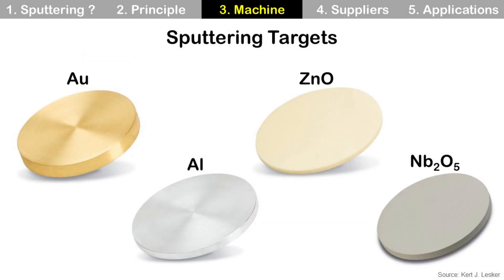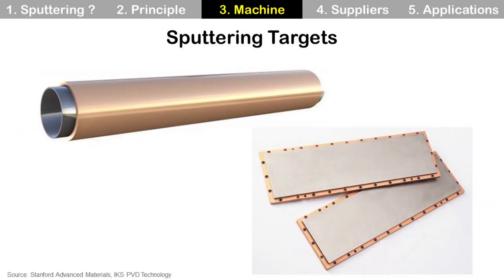These are some examples of disc-shaped sputtering targets. It can be metal like gold or aluminum, and dielectric materials like zinc oxide or niobium oxide. So many different materials are available as well. Cylinder-shaped and rectangle-shaped targets are available as well.